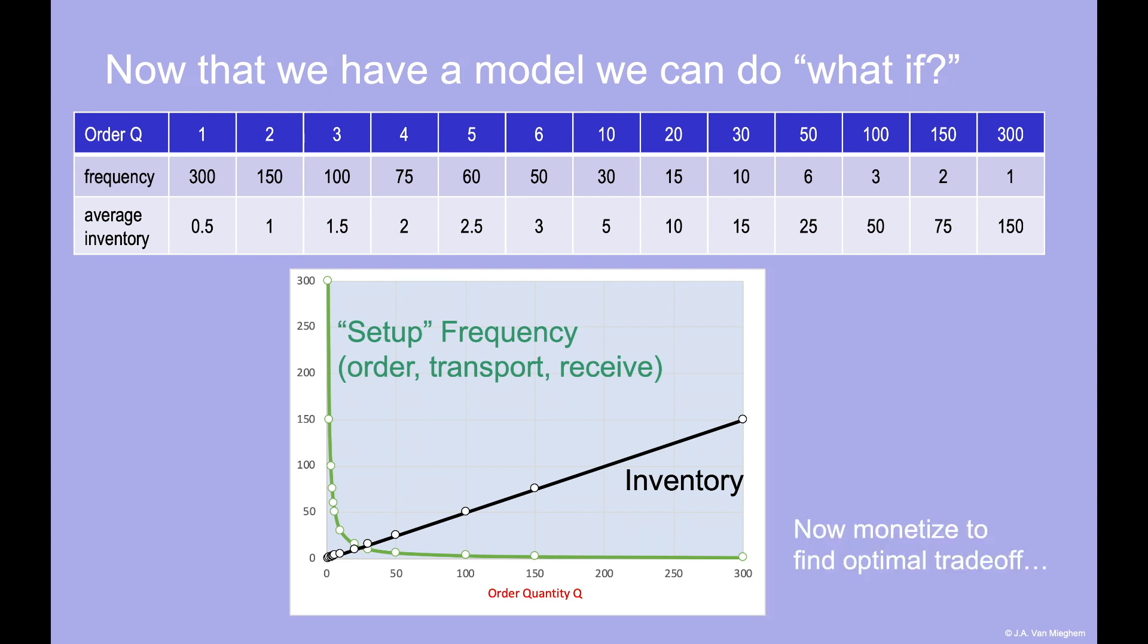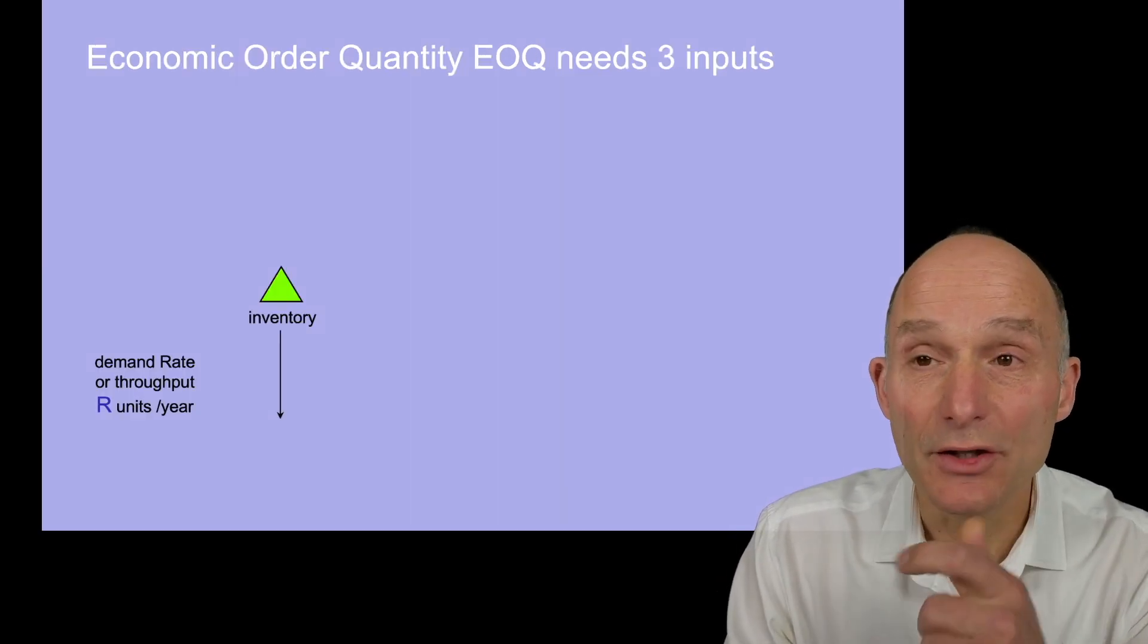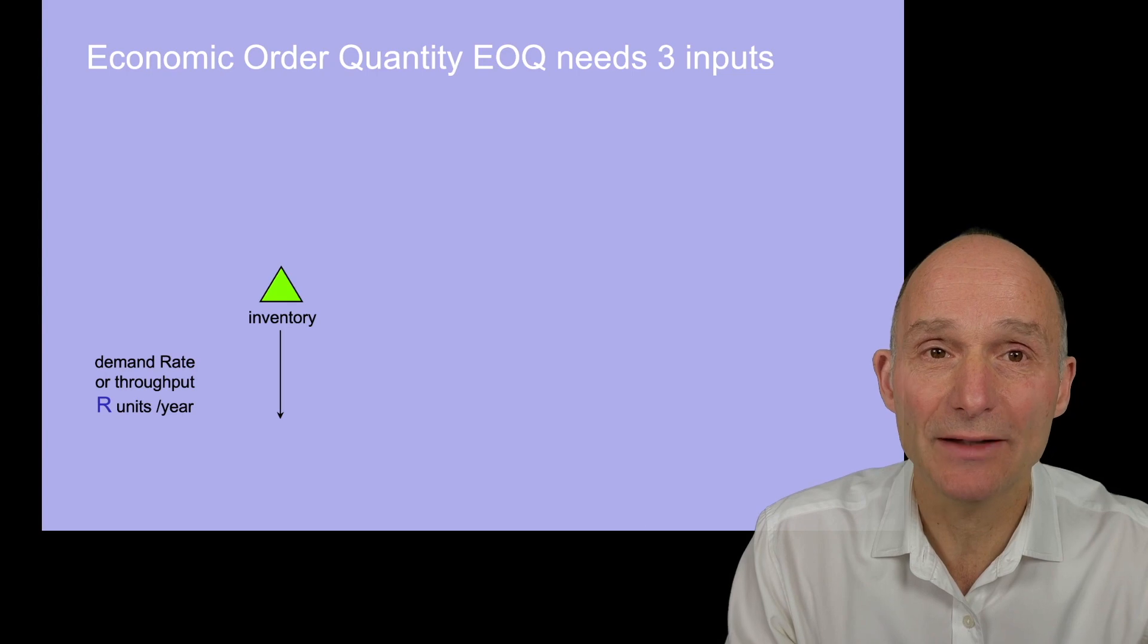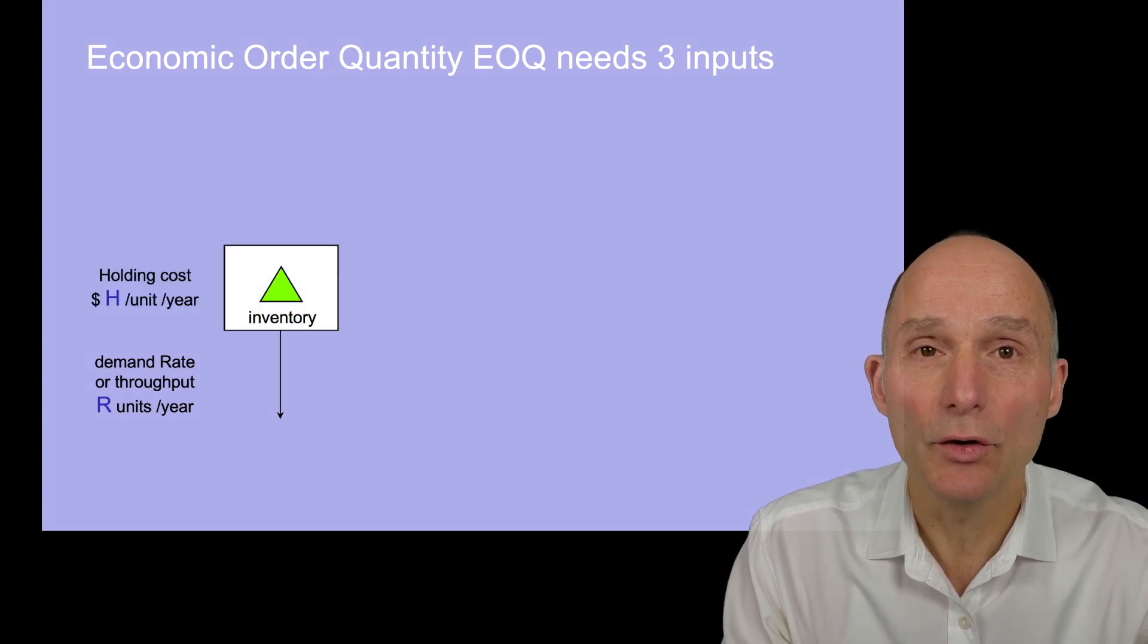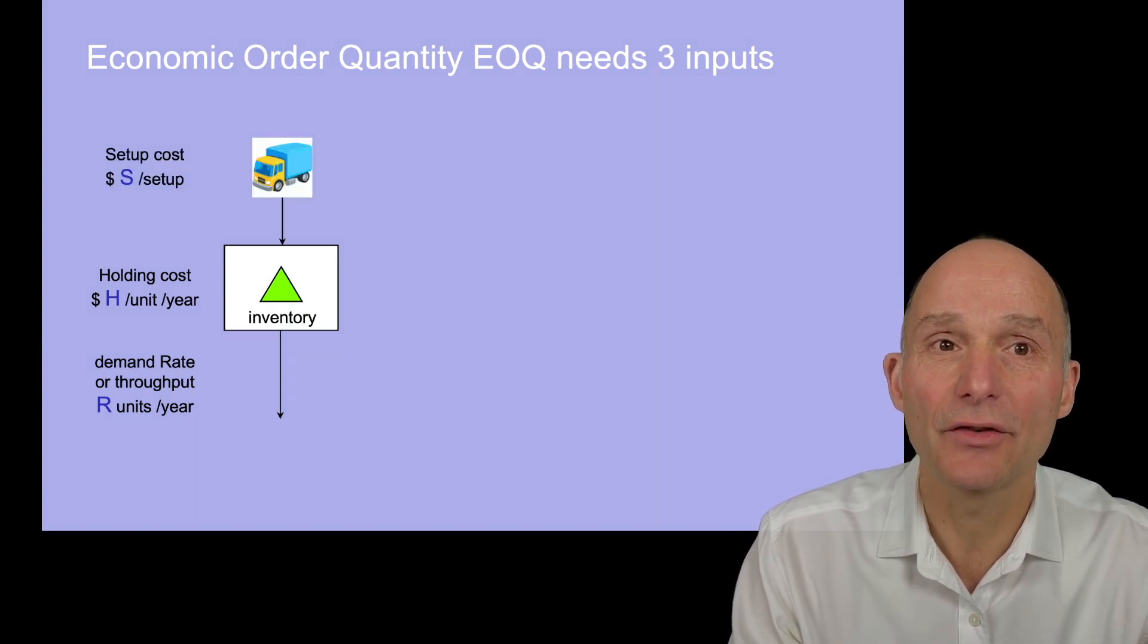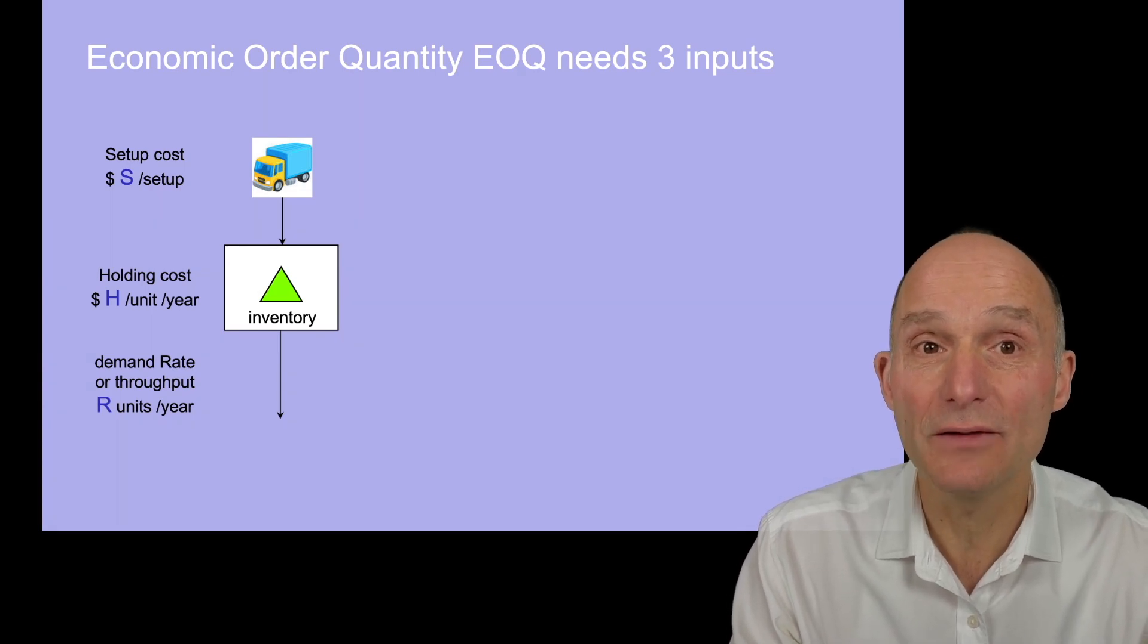To find that trade-off, we must put both curves in monetary units. So that's the last step. In addition to the demand rate or throughput, denoted by the input variable R, the EOQ model requires two monetary conversion factors. H is the holding cost you incur to hold one more unit in inventory. And S is the fixed cost you incur whenever you place, transport, or receive an order.